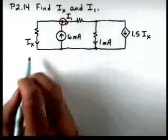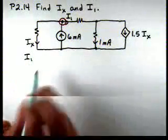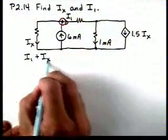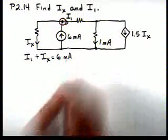So if we look at the currents leaving that node, we have the current I1 and the current Ix leaving. And that's going to be equal to the current entering, which is 6 milliamps.